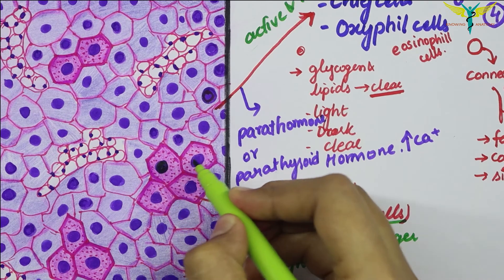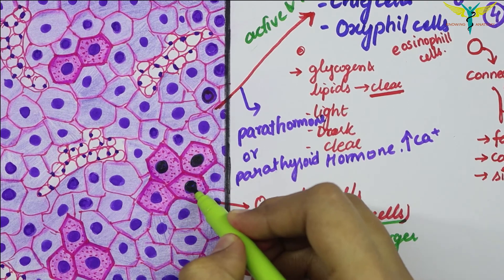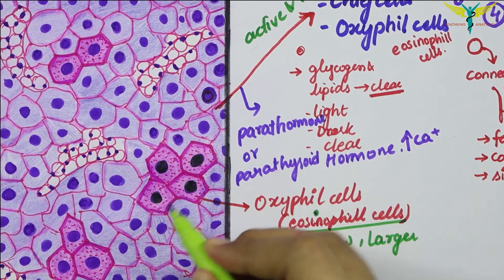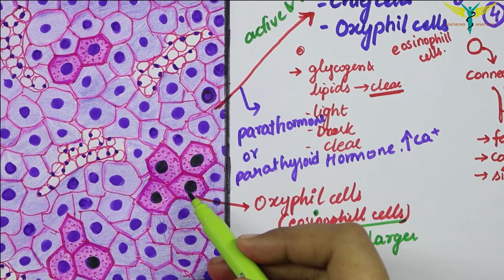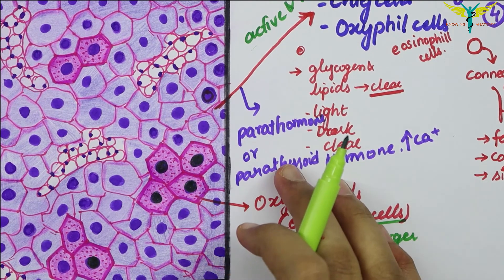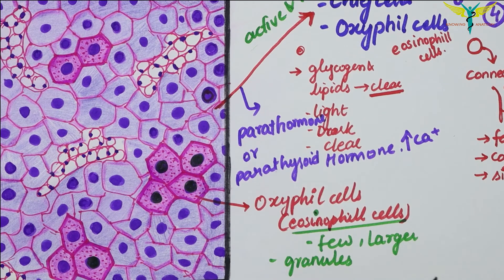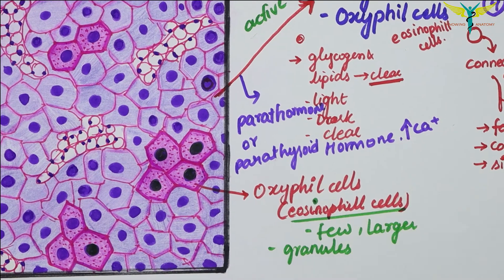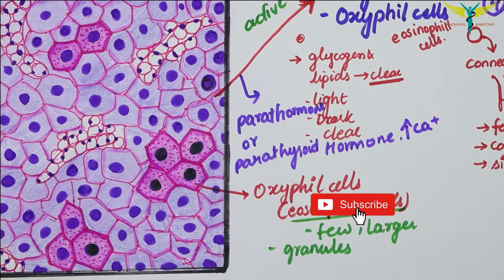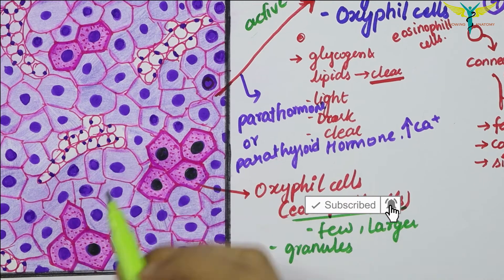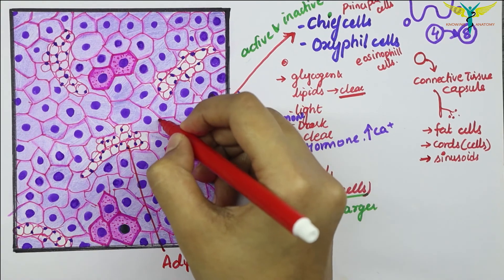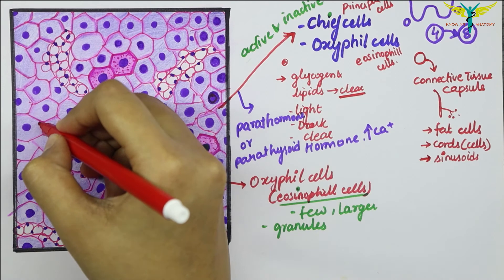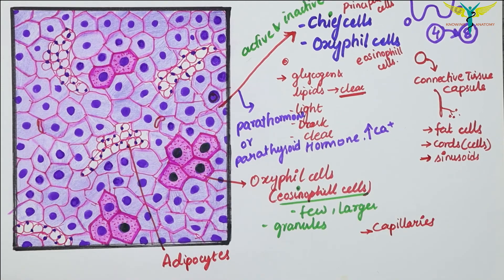The nuclei of oxyphil cells are smaller and stain more intensely than those of the chief cells. Oxyphil cells are absent in young age and appear just before the age of puberty. Adipocytes are also present in the parathyroid gland, and sinusoids and capillaries are present between the cells.